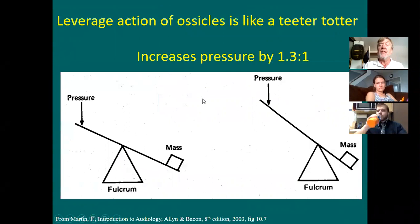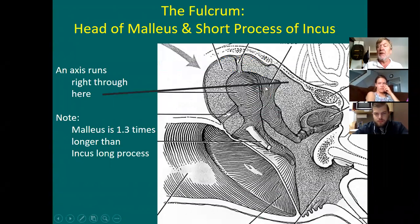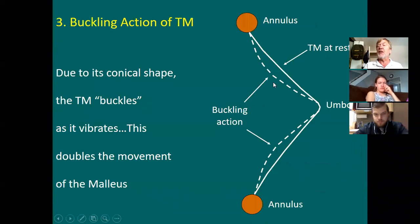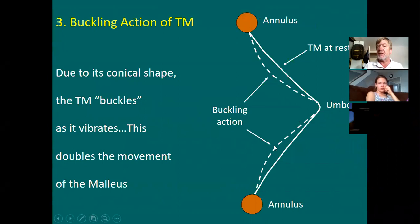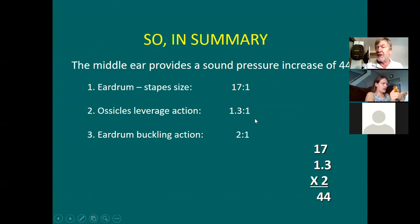The second way: the long process of the malleus is a little bit longer than the incus bone — just a tad longer. Like a teeter-totter or seesaw, one's a little longer than the other. The third thing: the eardrum doesn't move all together in one uniform motion — it buckles a bit, as you can see by the dotted lines. That's the third way the middle ear increases pressure. Summarizing: eardrum-to-stapes size, ossicle leverage action, eardrum buckling action. The eardrum is 17 times larger than the stapes, the malleus is 1.3 times longer than the incus. Multiply those together and you get a pressure increase of 44 to 1.